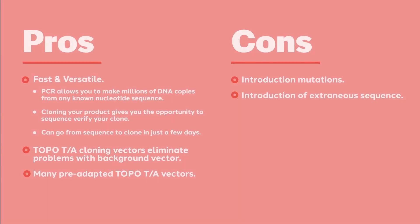Cloning of a PCR product is a fast, versatile, and robust process. The cloning methodology is well worked out, so as long as you have reasonably optimized PCR reactions, you can go from PCR product to colonies on a plate in 24 hours.